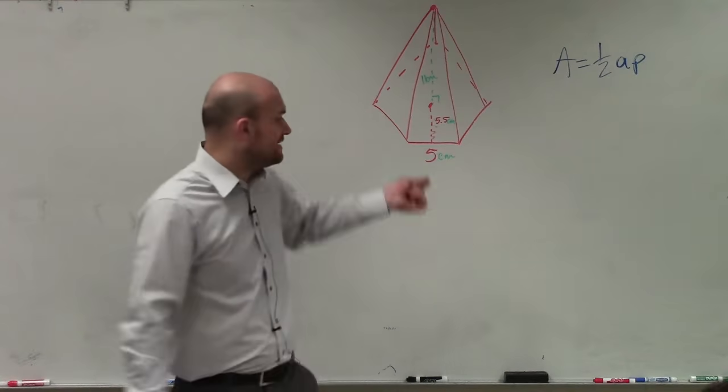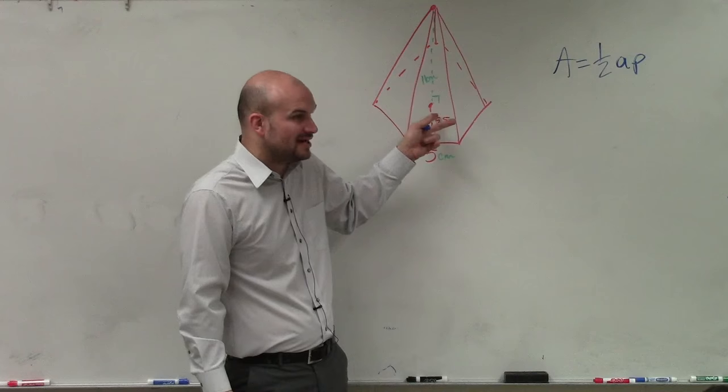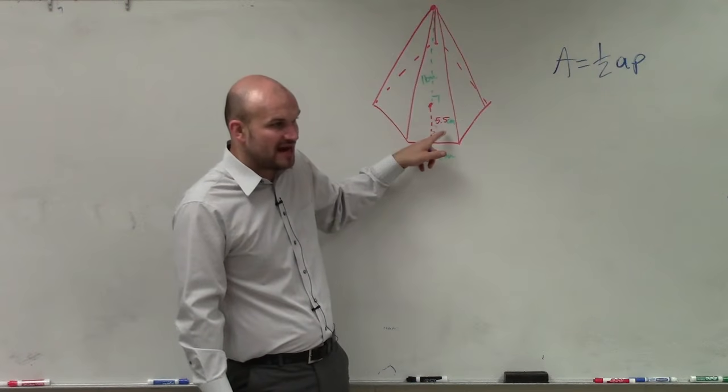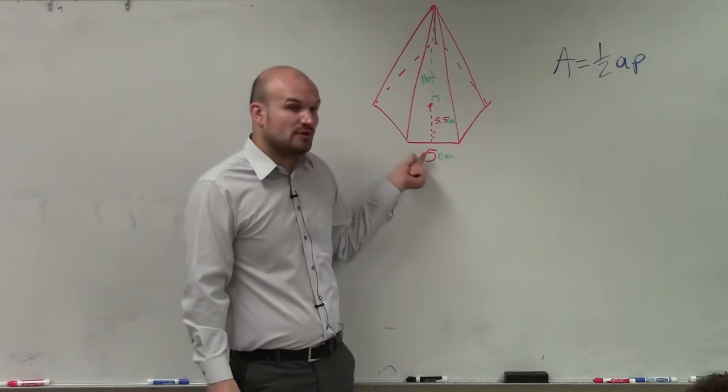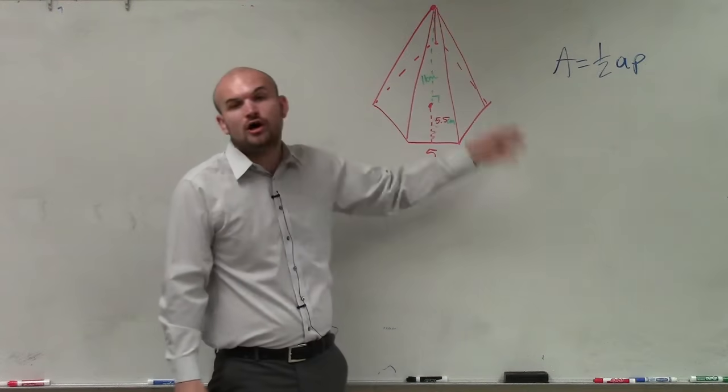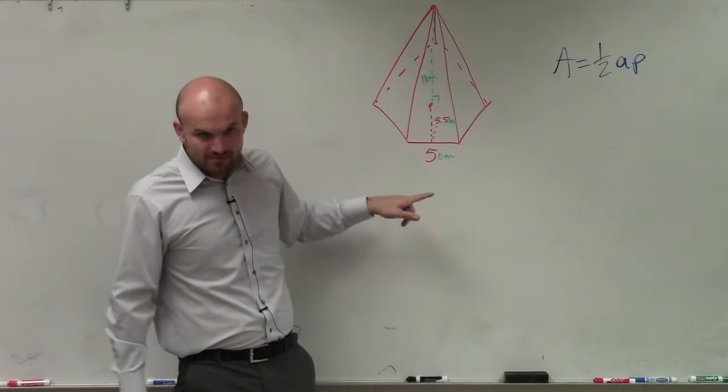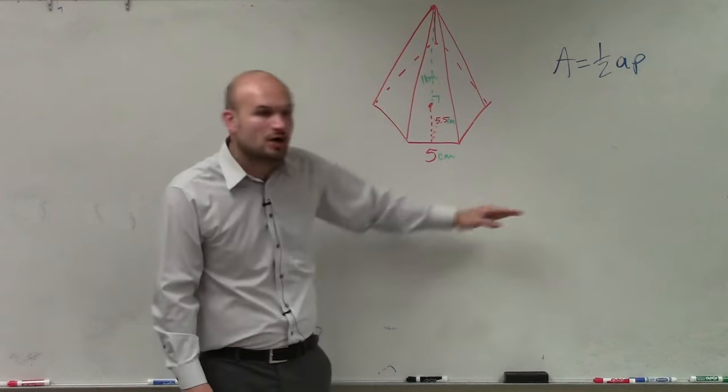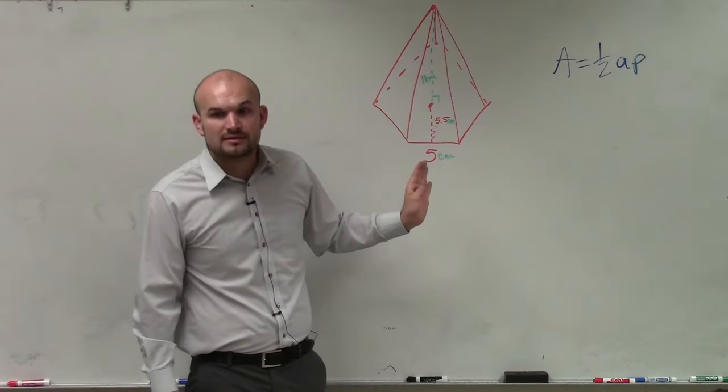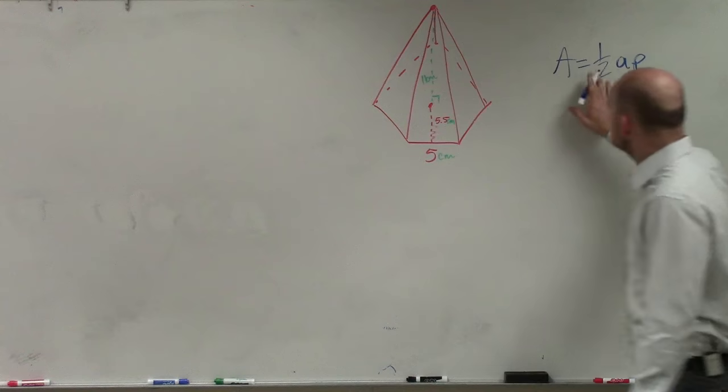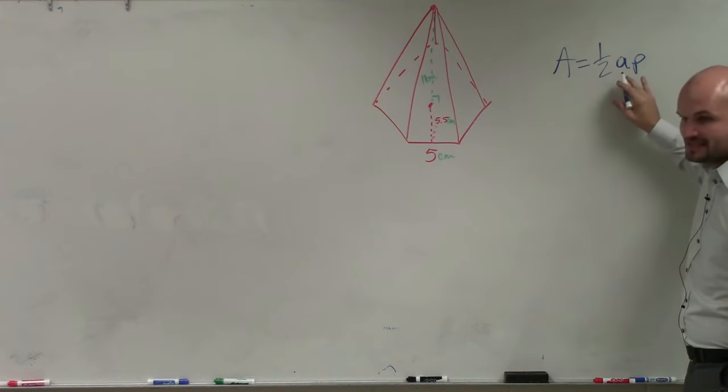So remember, the apothem was a distance from the side to the center, which in this case, the problem is showing as 5.5. And the perimeter is the addition of all the sides. Well, if this is a regular pentagon and one side is 5, that means all the sides are 5, correct? So this is going to be the area of my pentagon.